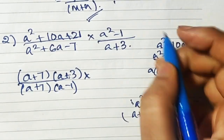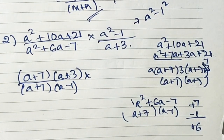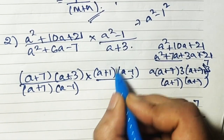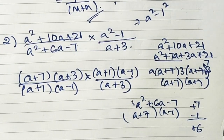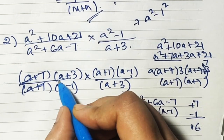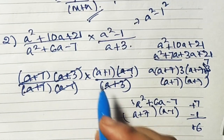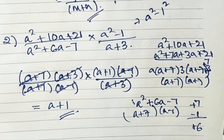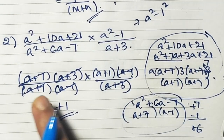Now a² - 1 is the same as a² - 1², so using the difference of squares formula it becomes (a + 1)(a - 1). The remaining denominator is (a + 3). After cancellation: (a + 7) cancels, (a + 3) cancels, and (a - 1) cancels. The final answer is (a + 1).